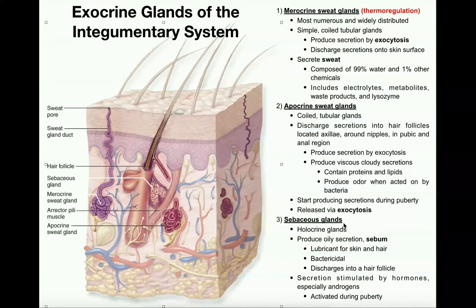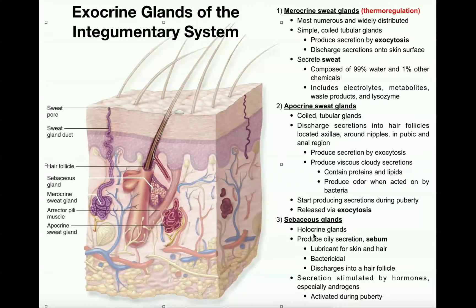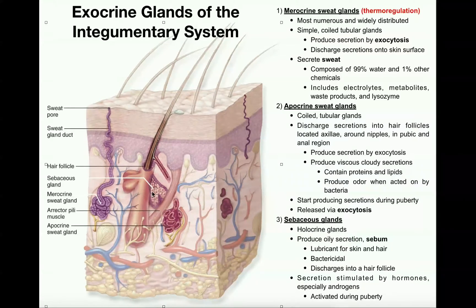The third type of exocrine gland is called a sebaceous gland, which produces an oily substance called sebum. The specific class they belong to is a holocrine gland. Holocrine glands generate cells that contain oil or sebum, and those cells eventually rupture and disintegrate, releasing their contents — the sebum. Sebaceous glands are actually attached directly to the hair follicle, and they discharge sebum into the hair follicle.